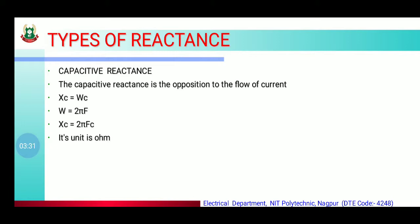The next reactance is capacitive reactance. The capacitive reactance is the opposition to the flow of current. Capacitive reactance का formula है XC = 1/(ωC). अगर omega की value पता है तो directly calculate कर सकते हैं। अगर omega की value पता नहीं है तो omega = 2πF, so XC = 1/(2πFC). Capacitive reactance का unit भी ohm होता है।